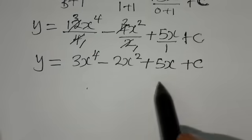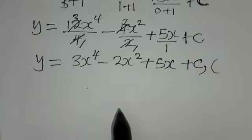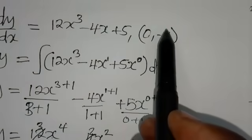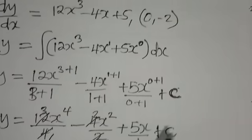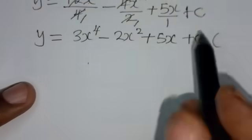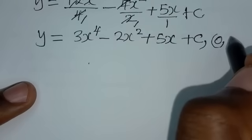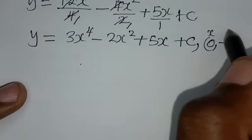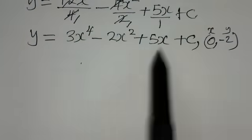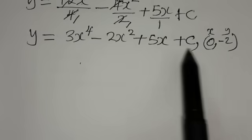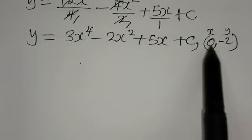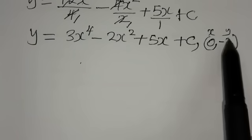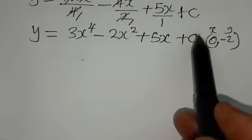Remember, they said this curve passes through the point (0, negative 2). So, since it passes through that point, 0 is the x-coordinate and negative 2 is the y-coordinate. We are going to replace x with 0 and y with negative 2 in this equation so that we find the value of C.